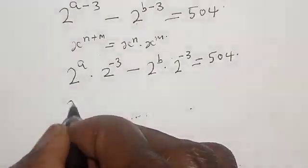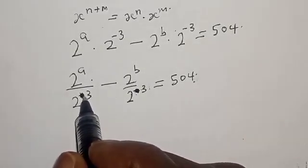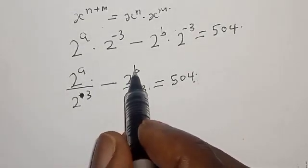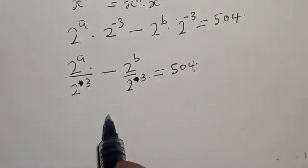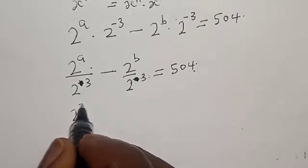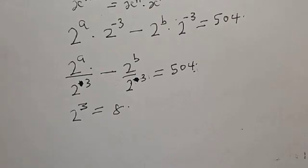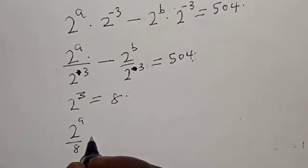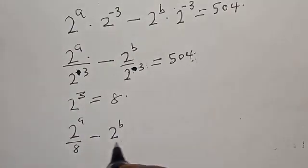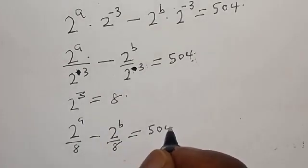Remember, 2 raised to power 3 equals what? 8. So we have 8. Therefore our equation becomes 2 raised to power a over 8, minus 2 raised to power b over 8, equal to 5/4.